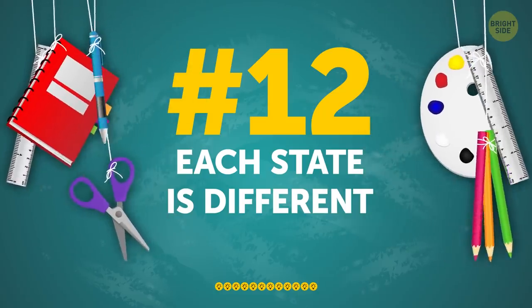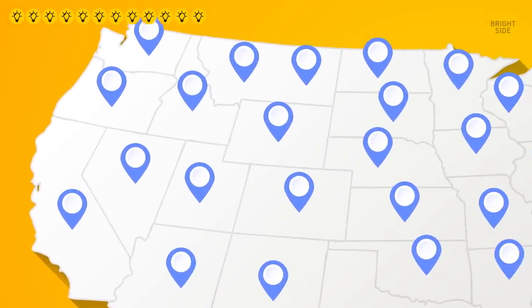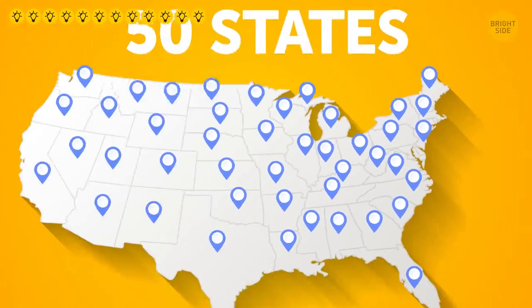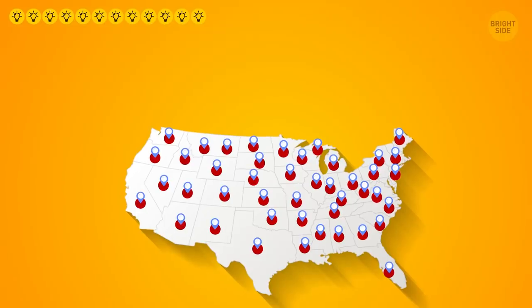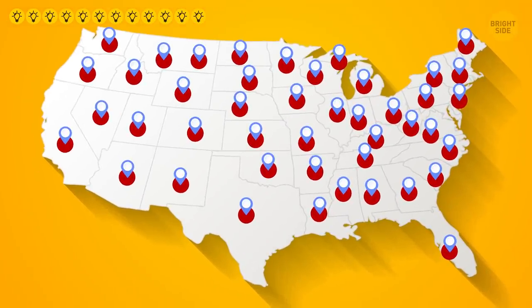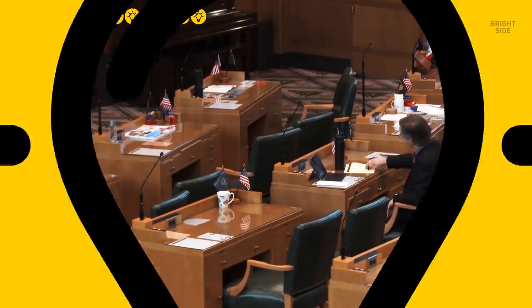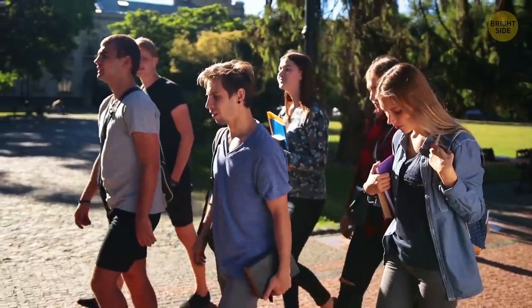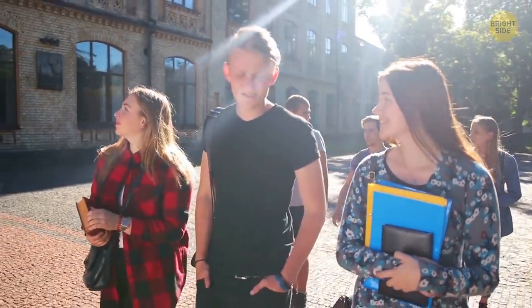Number twelve: each state is different. The most unique thing about US education is that each state is going to be a little different. That's 50 different states who all have multiple cities and counties that are home to our schools. There will be differences in grading scales, testing requirements, class structure, rules — pretty much everything. No school in the US is the same, and that's the beauty of it. Since the US has that separation of state, each state can appoint its own panel of educational rule makers. Ah yes, high school memories! I remember I was in that half of the class that made the upper half possible — I'm so proud!